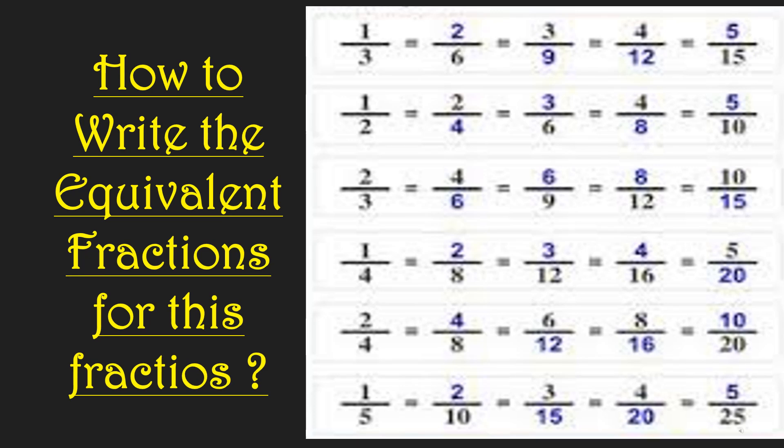Now see how to write equivalent fractions for these numbers — I am giving examples: 1/3, 1/2, 2/3, 1/4, 2/4, and 1/5. For the first one, 1/3: multiplying numerator and denominator by 2/2 gives 2/6. Multiplying by 3/3 gives 3/9. Multiplying by 4/4 gives 4/12. Multiplying by 5/5 gives 5/15.